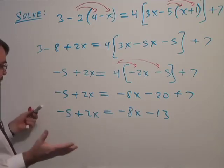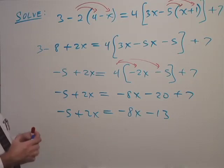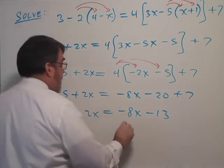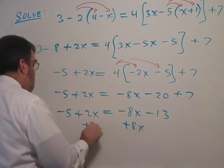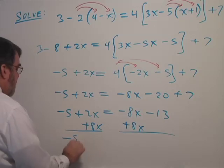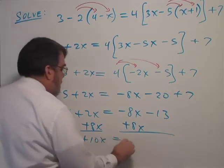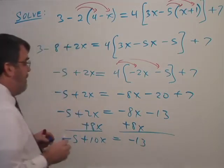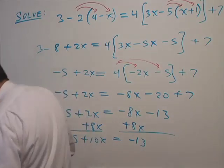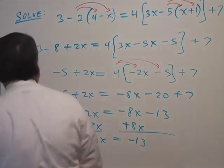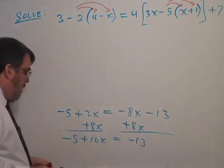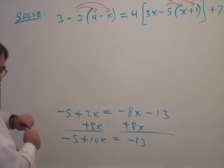I'm going to choose to add 8x to both sides. Plus 8x. And that gives me minus 5 plus 10x equals negative 13. And I'm starting to run out of room, so I'm going to do a little erasing. Let me take it up to here.